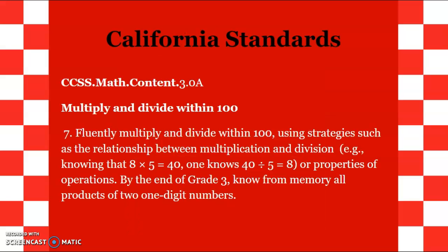First I'm going to go over the California standards that this book will be covering. I'm covering: fluently multiply and divide within 100 using strategies such as the relationship between multiplication and division — for example, knowing that 4 divided by 5 equals 8 — or properties of operations. By the end of grade 3, know from memory all products of two one-digit numbers.